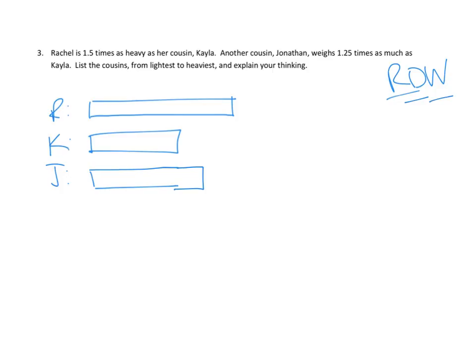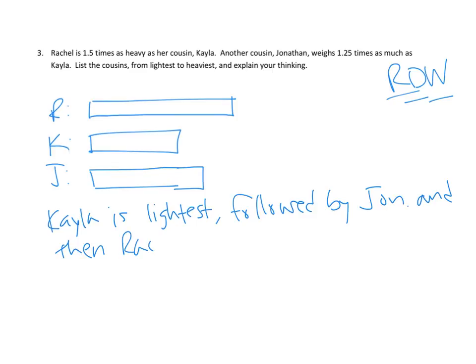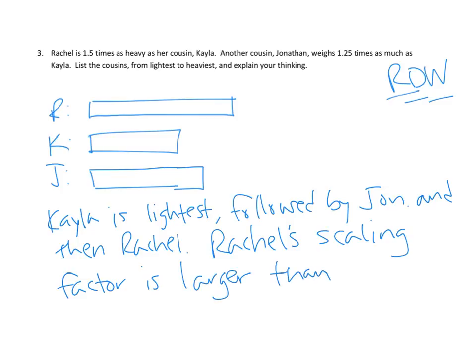So now we've done our draw part. We're really ready for our right part. We're supposed to list them from lightest to heaviest. So I think it looks like Kayla is lightest, followed by Jonathan and then Rachel. And how would we say that? I'm going to use scaling factor. I'm going to use our math vocabulary. Rachel's scaling factor is larger than Jonathan's. That's how we know. Because we've multiplied Kayla's weight times 1.5 to get to Rachel, but only times 1.25 to get to Jonathan. Awesome.